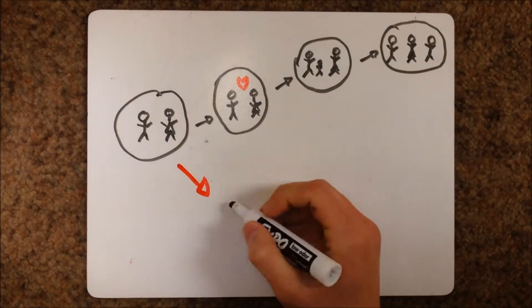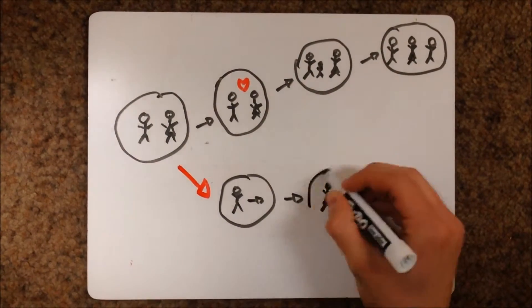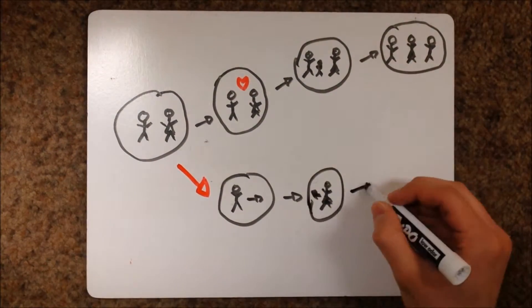But what if John and Susie had simply walked past each other? None of this would have happened, right? Well, not according to the many worlds theory.